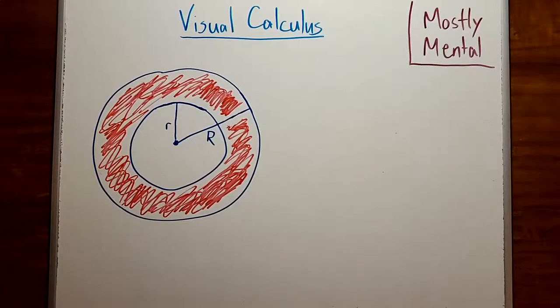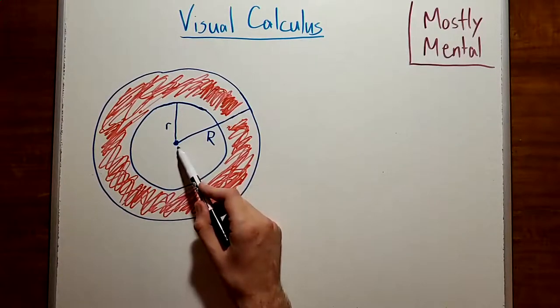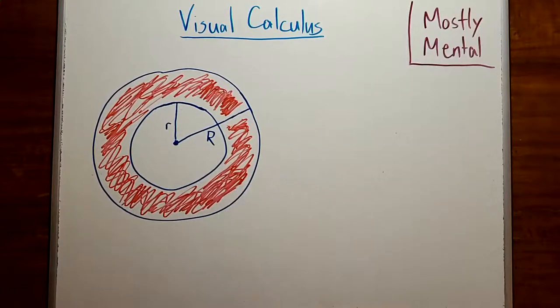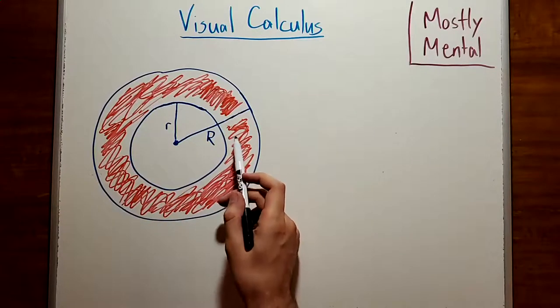We'll start with a motivating example. Say we have two circles which share a center, with radii little r and big R, respectively. What's the area of this shaded region, this annulus, between them?